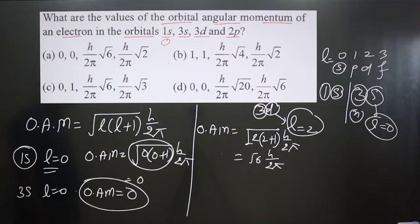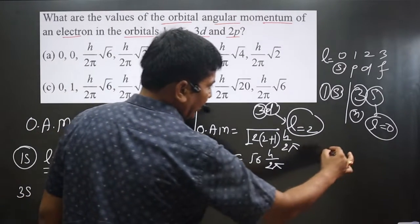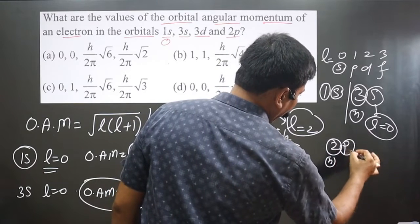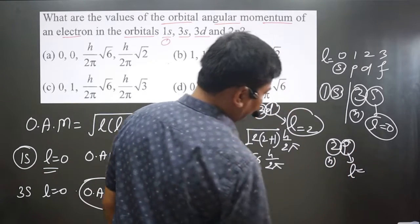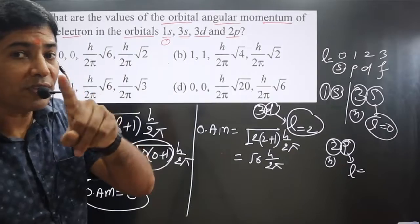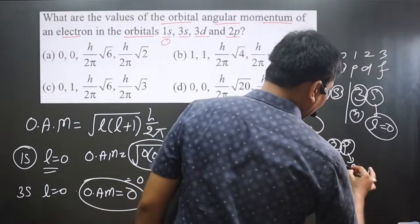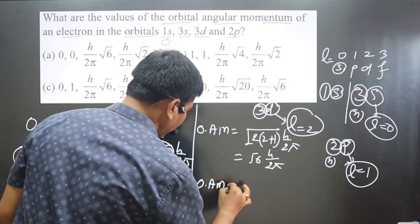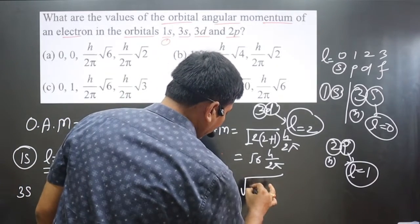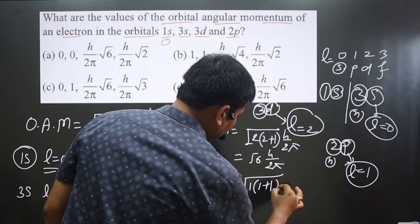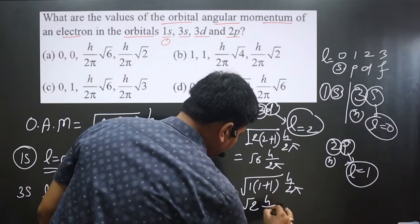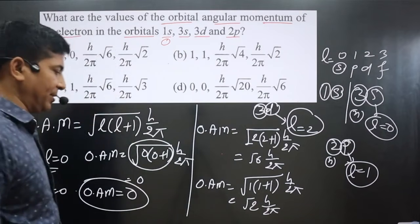Finally, we have 2p. Here '2' is the n value, and for a p orbital l = 1. So orbital angular momentum = √(1 × (1+1)) × h/2π = √(1 × 2) × h/2π = √2 × h/2π.